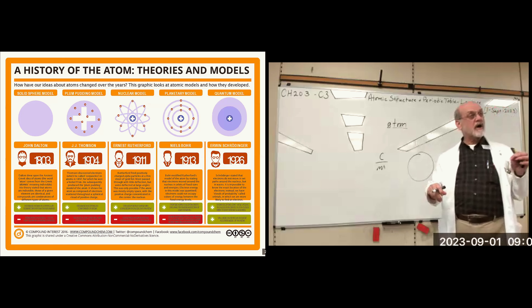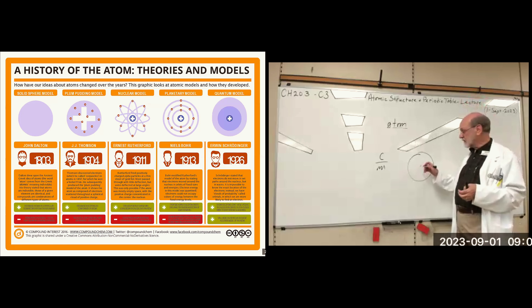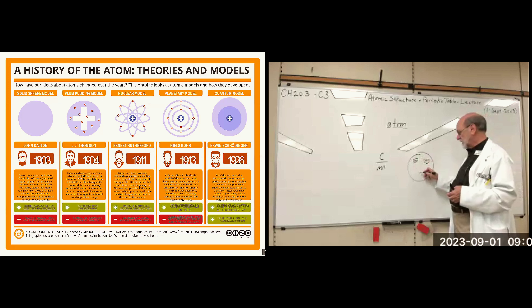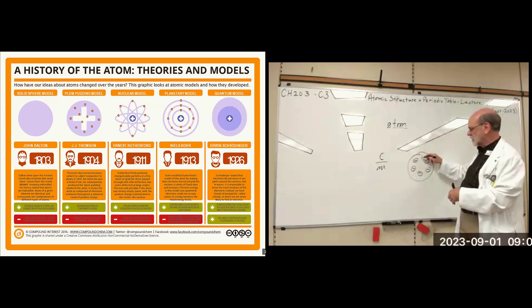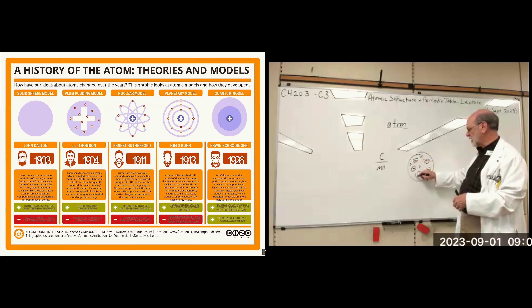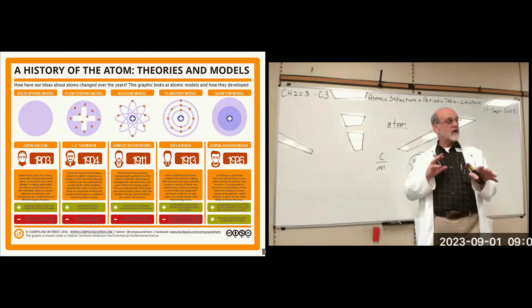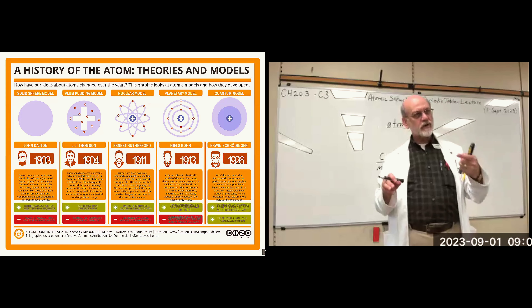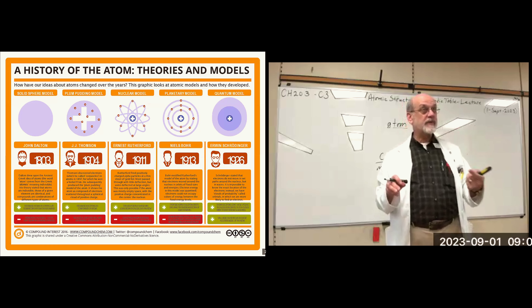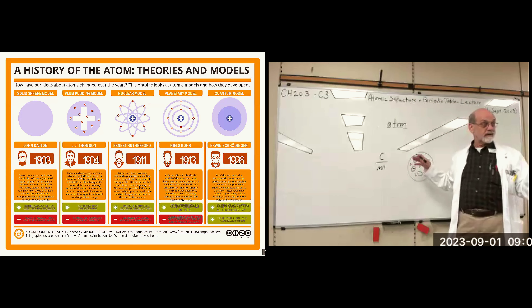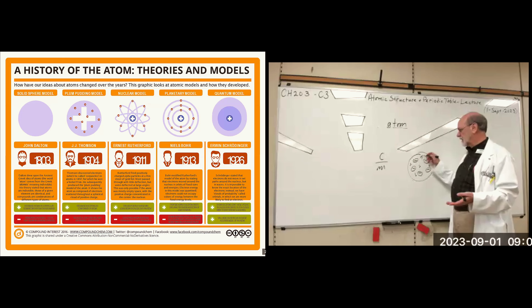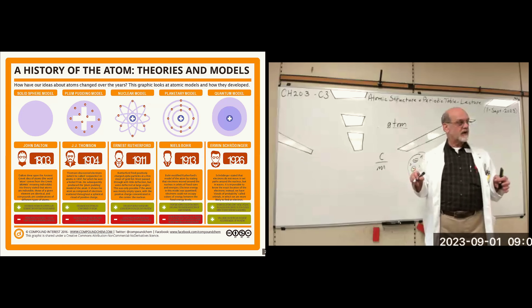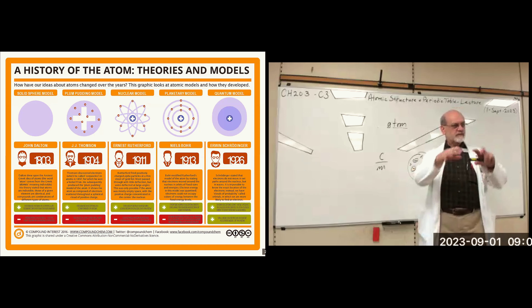The plum pudding model was called that because the electrons were considered individual particles scattered in the atom like that, and the rest of the atom was composed of an equal but opposite charge — because we knew atoms of elements were neutral. So if we knew there was an electron there, there had to be something balancing the charge. But we didn't consider it a particle at the time; we thought it was just part of the matrix, the pudding. The pieces of plum were the electrons.